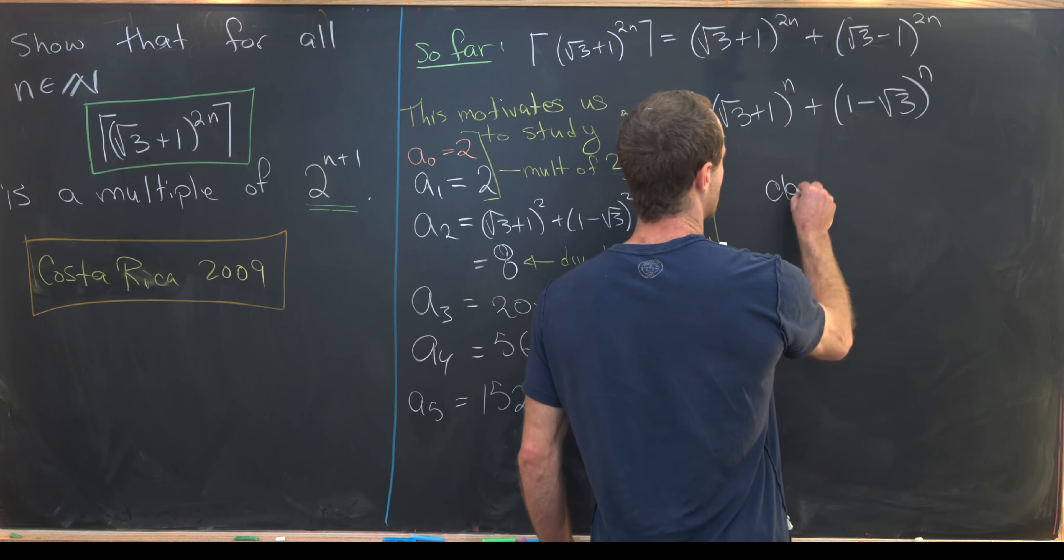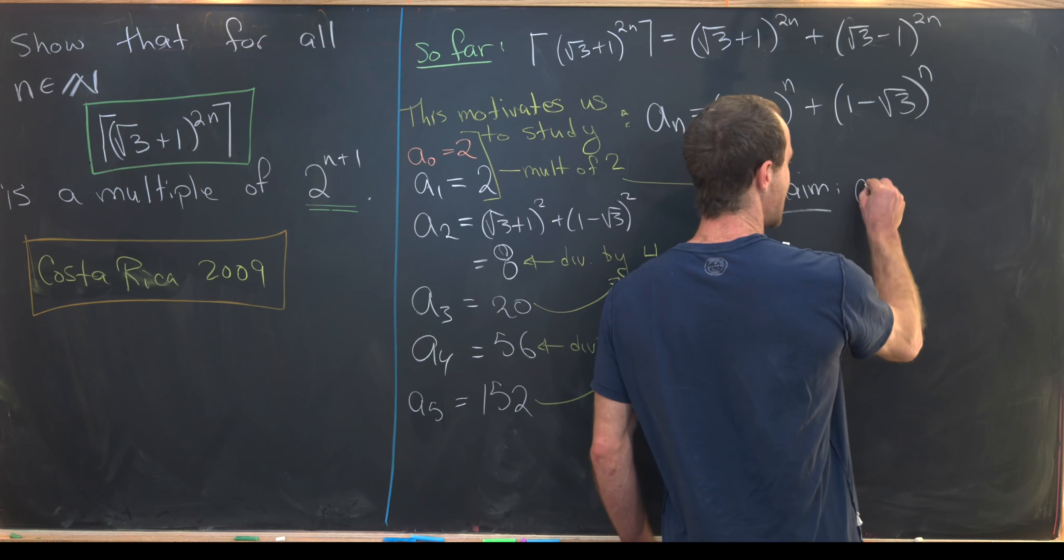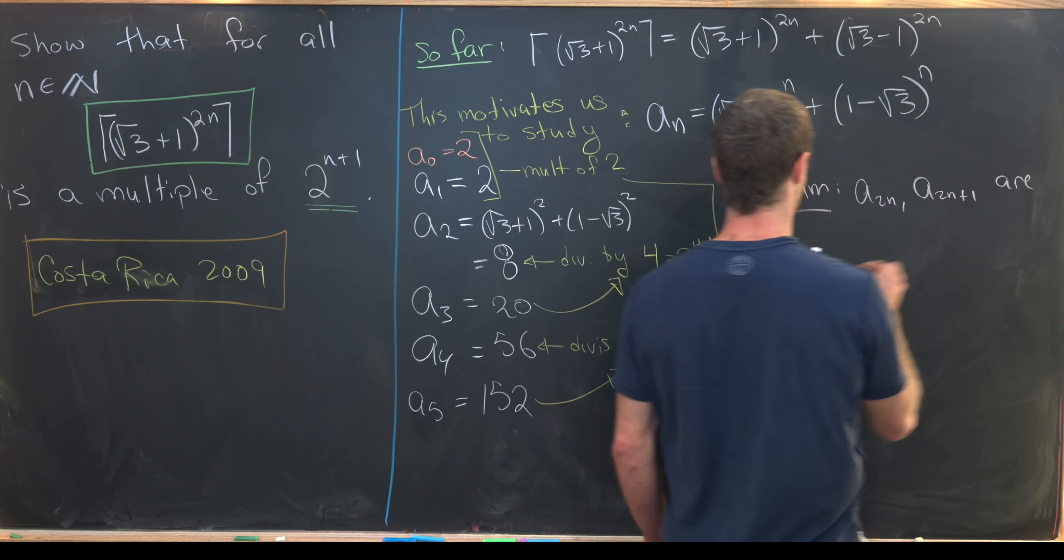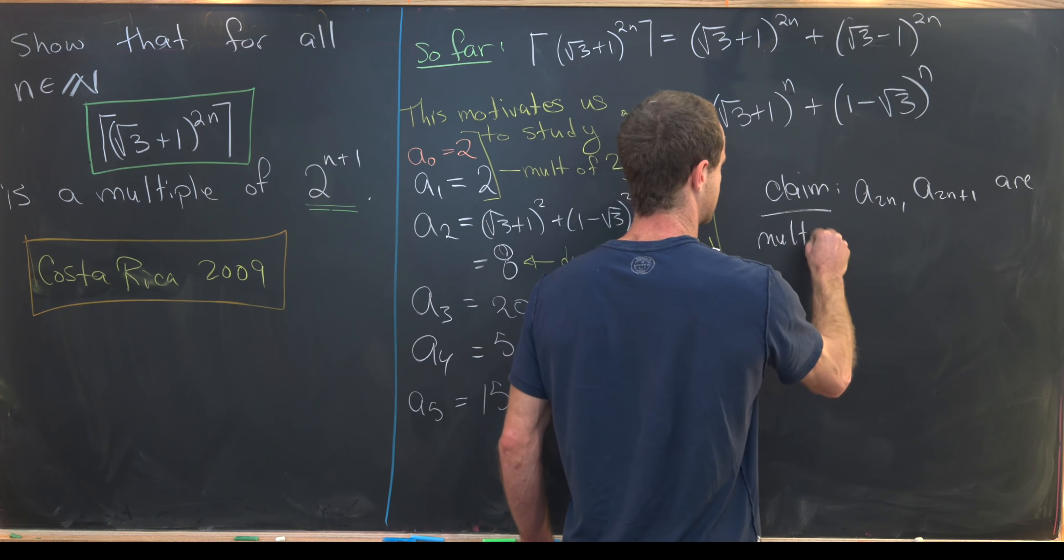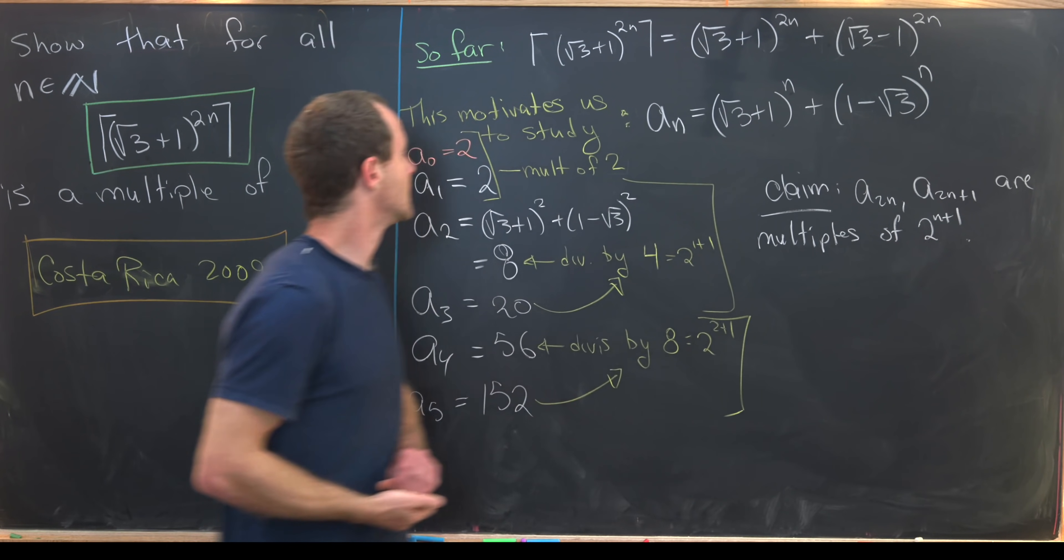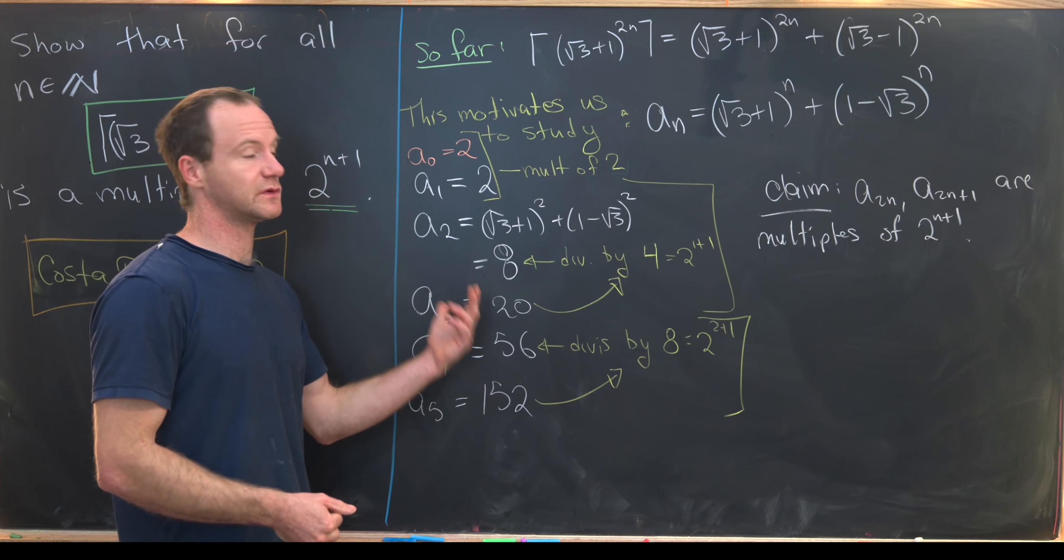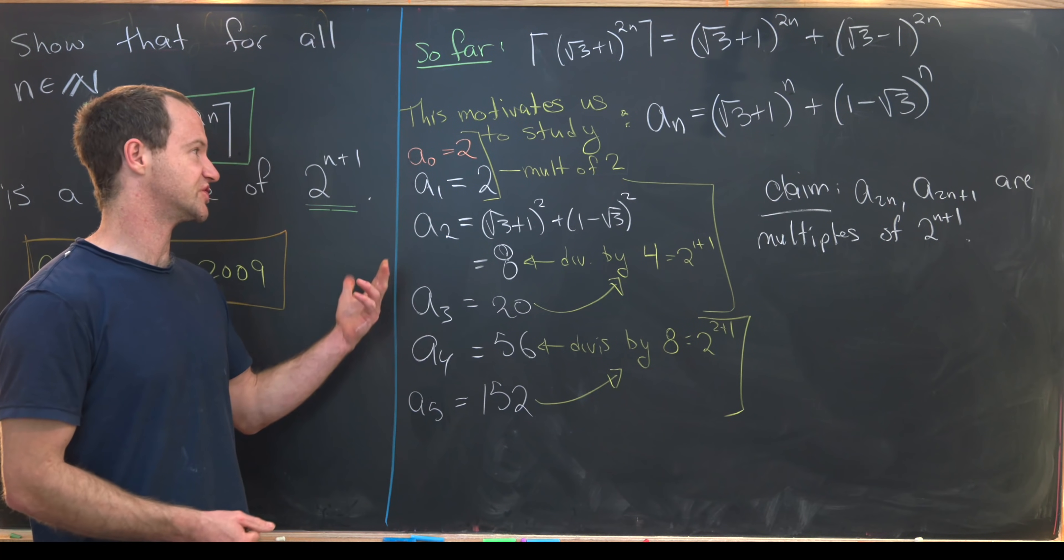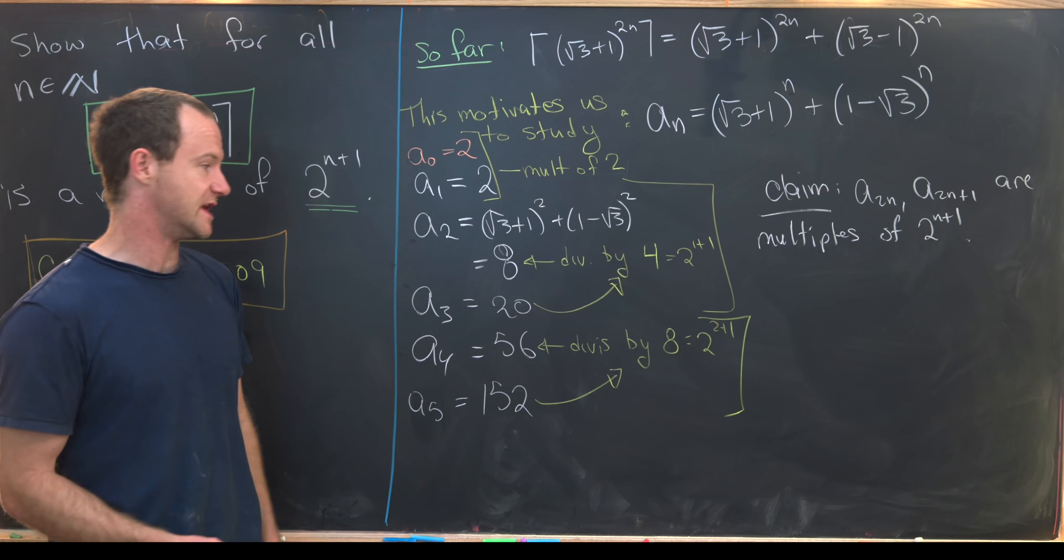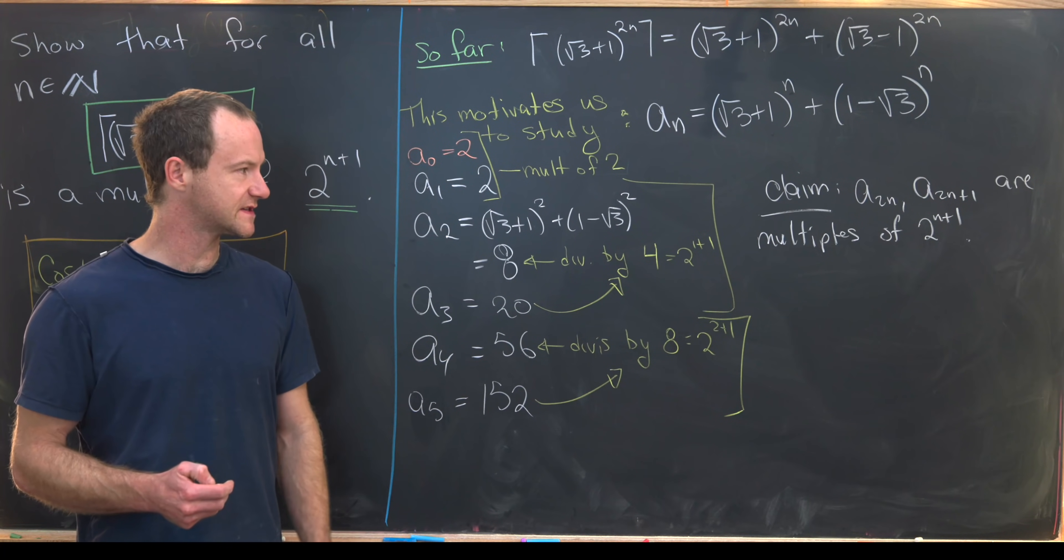So what's the claim that we'll end up proving? So our claim will be that a sub 2n and a sub 2n plus 1 are multiples of 2 to the n plus 1. So notice for this pair, our n is equal to 0. So we'll have 2 to the 0 plus 1, which is just 2. We're good to go there. For this pair, our n is 1. For this pair, our n is 2. So everything seems to work here.